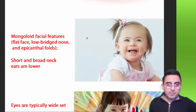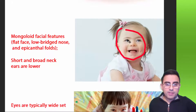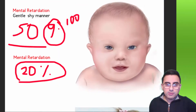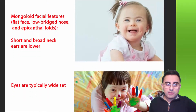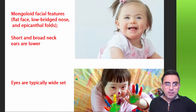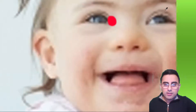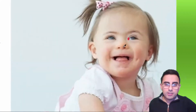A characteristic feature of Down syndrome is the mongoloid face. You can see a round, flat face, which is very important. Almost every Down syndrome child has a broad and flat face with a low bridge nose and epicanthal folds. The epicanthal fold covers the inner corner of the eye.